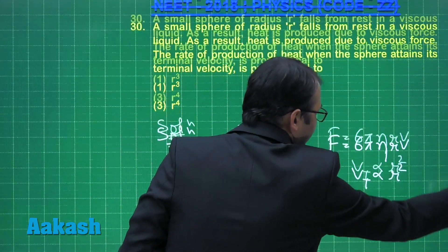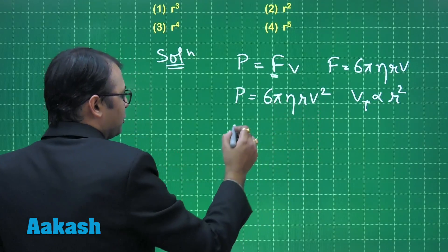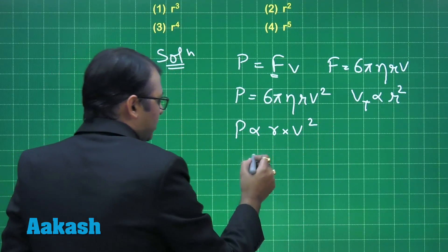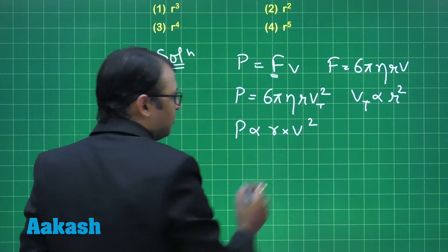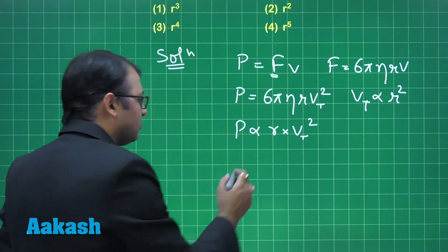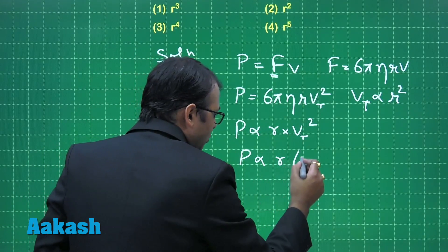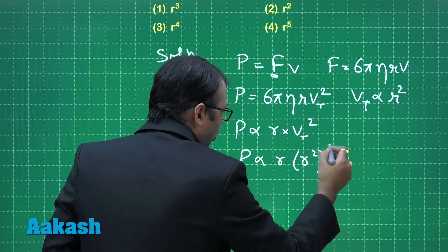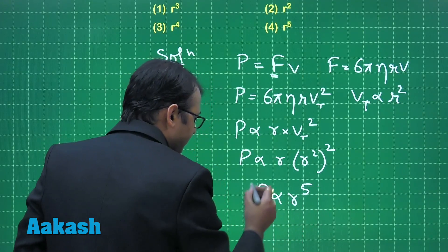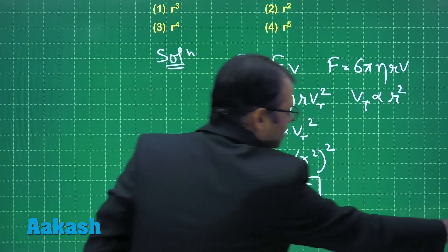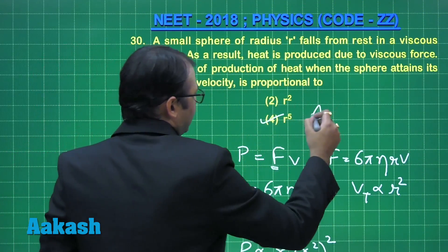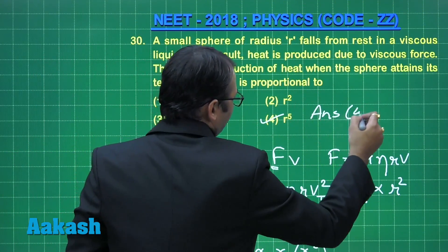Incorporating this, P is proportional to r into v squared. Since this velocity is terminal velocity, P is proportional to r × (r²)², which gives P proportional to r to the power 5. Checking the options, the correct answer to this question is option 4.